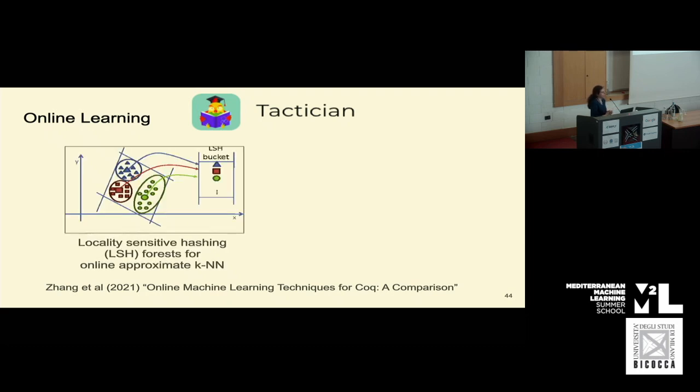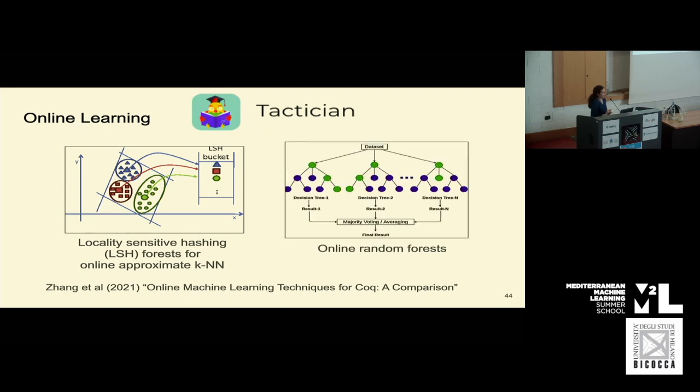But instead of casting a wide net and use models that have learned from other people's proofs, another technique in theorem proving is to use online learning in order to adapt to your particular project. A tool called Tactician for Coq looks at different popular online machine learning techniques, such as locality sensitive hashing forests for online approximate KNN, and online random forests. This works by selecting tactics to reuse that were already used in other proofs in your project.